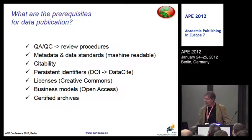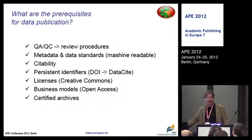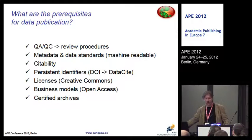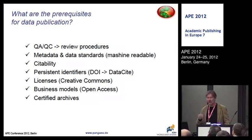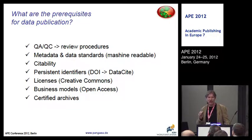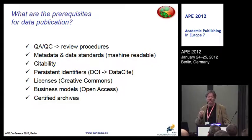So what are the prerequisites for publishing data? For sure, we need to have quality assurance, quality control — that needs to find entrance also into review procedures. We need metadata, structured metadata and data standards. Data need to be machine-readable, because it's not the purpose to get a single data publication somewhere. The data needs to be structured in a way so that it can be integrated. Only then we have the possibility to do really complex, multidisciplinary approaches in science, or large-scale approaches in science.